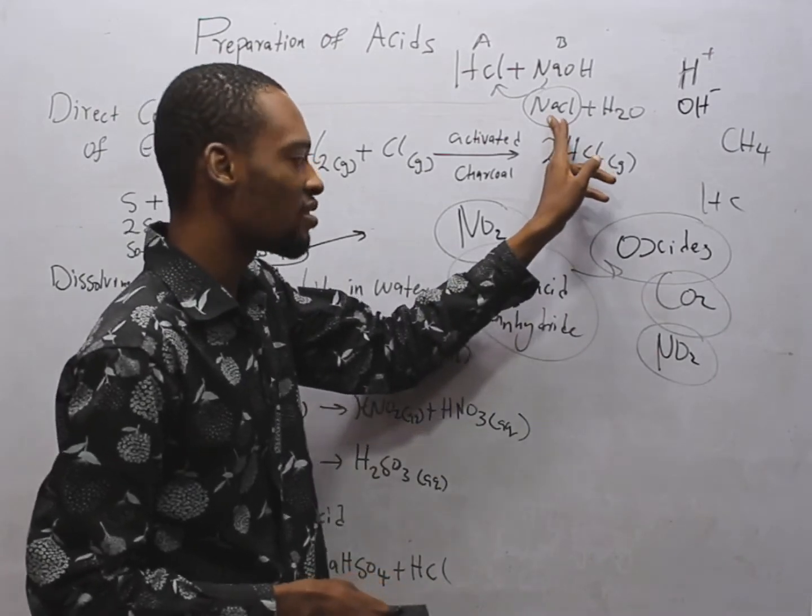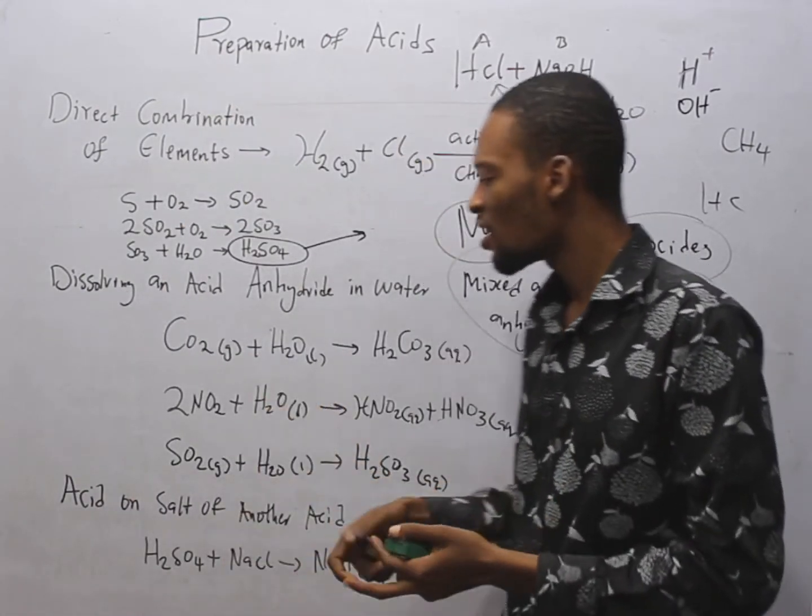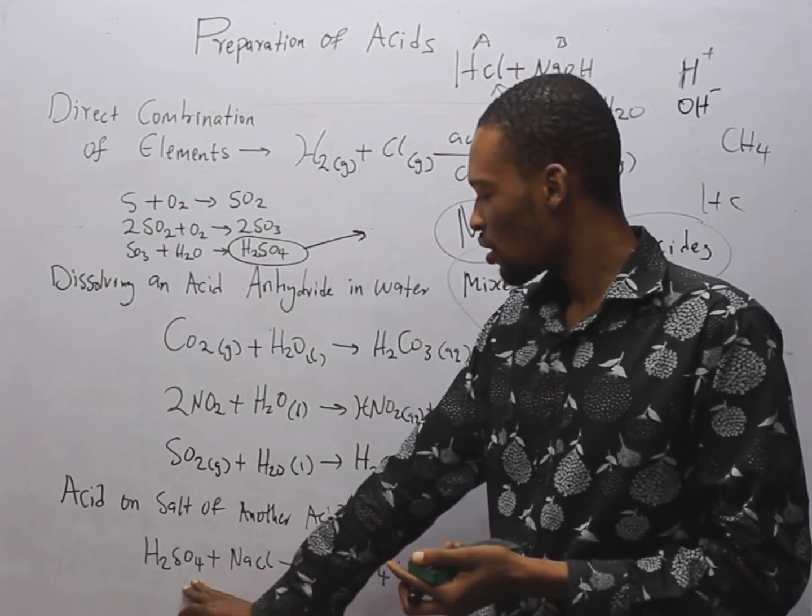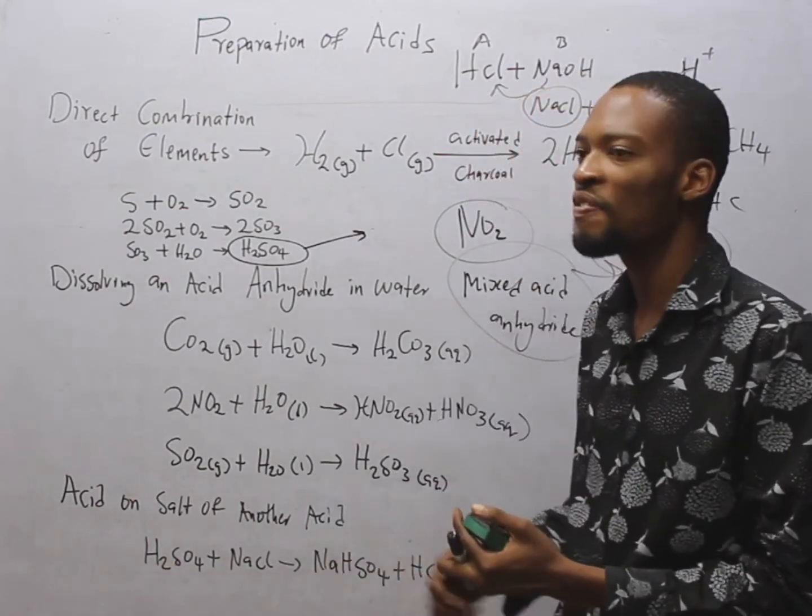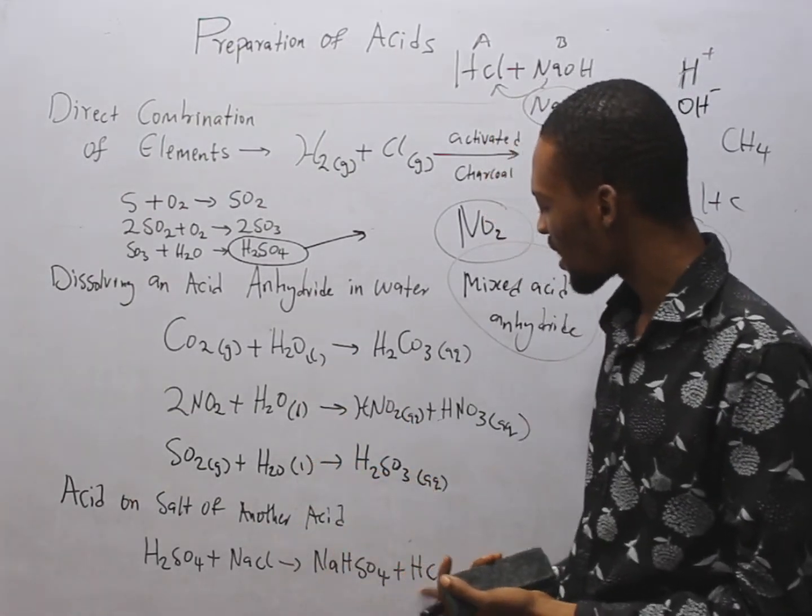Now, this is a salt of an acid, right? If this salt of the acid reacts with another acid, which is H2SO4, where H2SO4 has far higher boiling points, it forms acid.